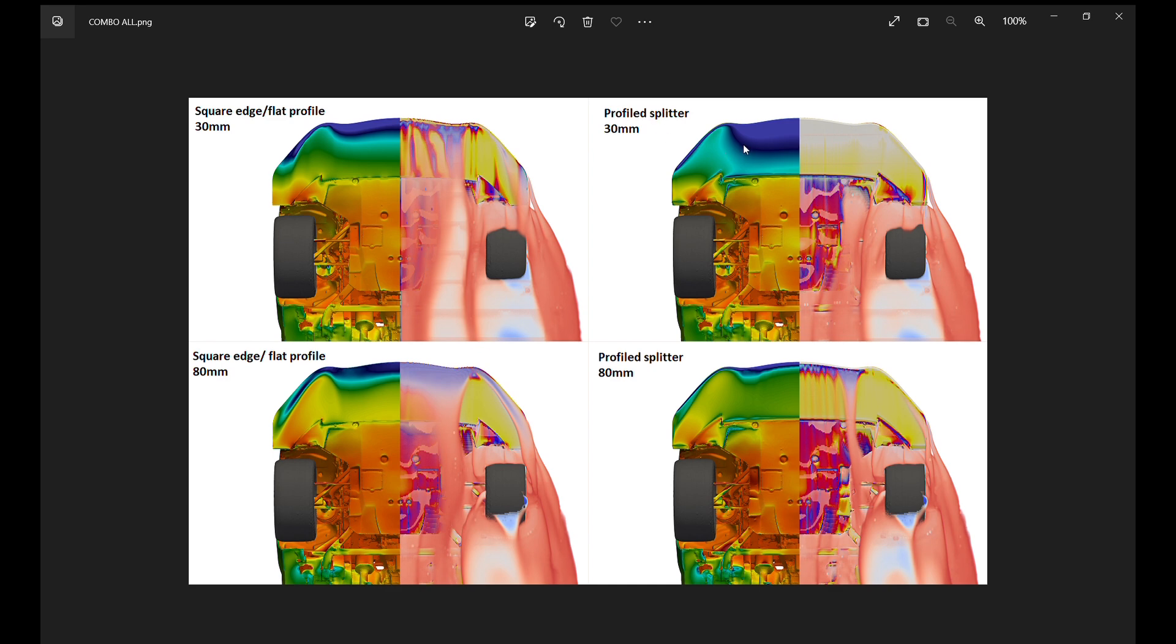Now 80 millimeters which is about three and a quarter inches, you can see the square edge actually has a larger low pressure zone right across the leading edge than our profiled splitter. But if you look at the entire body of the splitter, this one gets back to a yellow even an orange color over here on the side where ours is green throughout the body. So even at an 80 millimeter ride height the splitter itself does make more downforce.